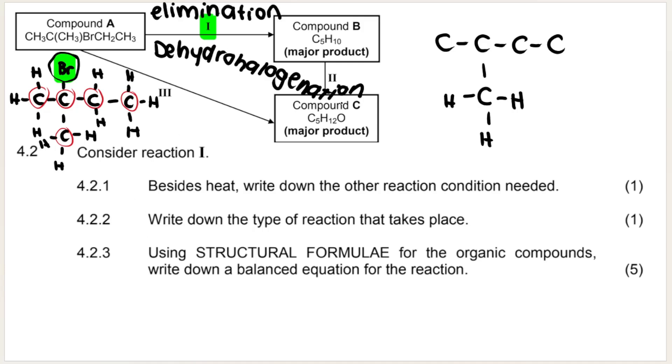And you should know for dehydrohalogenation, as I mentioned in my elimination video, you need heat and you also need a concentrated strong base, such as sodium hydroxide NaOH, or potassium hydroxide, or lithium hydroxide. So you could have just said concentrated strong base, or you could have said concentrated sodium hydroxide or potassium hydroxide, or you could have said concentrated strong base and give an example.